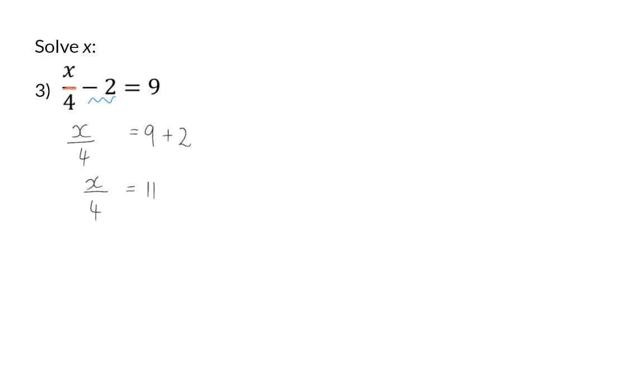And now, I need to get rid of the divided by 4, again, by doing the inverse calculation, which is multiplying by 4. And, again, I do that on both sides. On the left, we have 4 divided by 4, which is 1. So, that means I'm left with x is equal to 44.